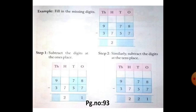Step 2. Similarly, subtract the digits at the tenth's place. So 7 minus 5. So 7 minus 5 is 2.